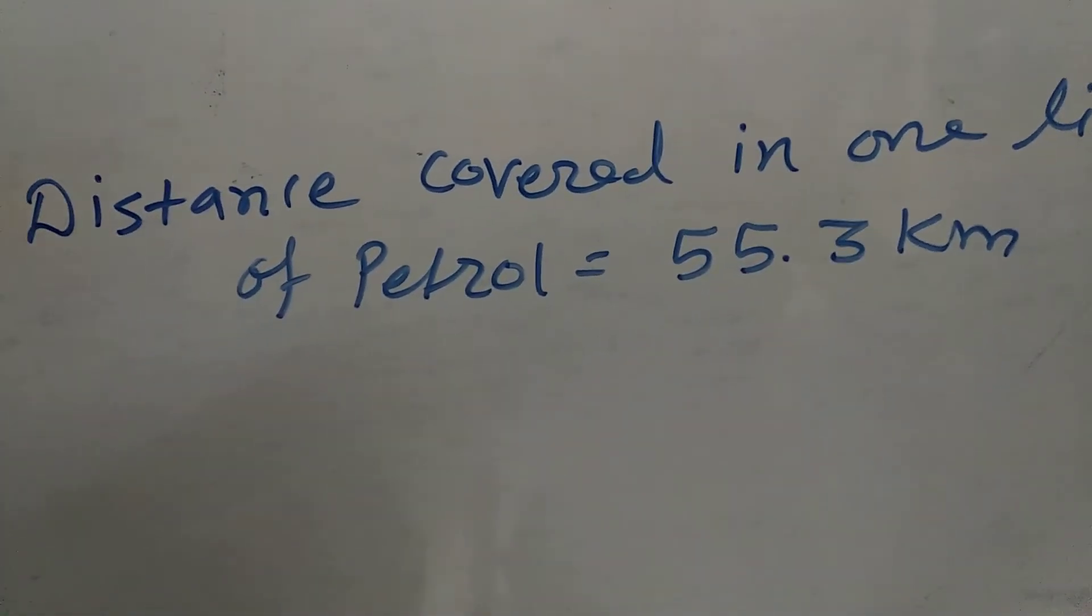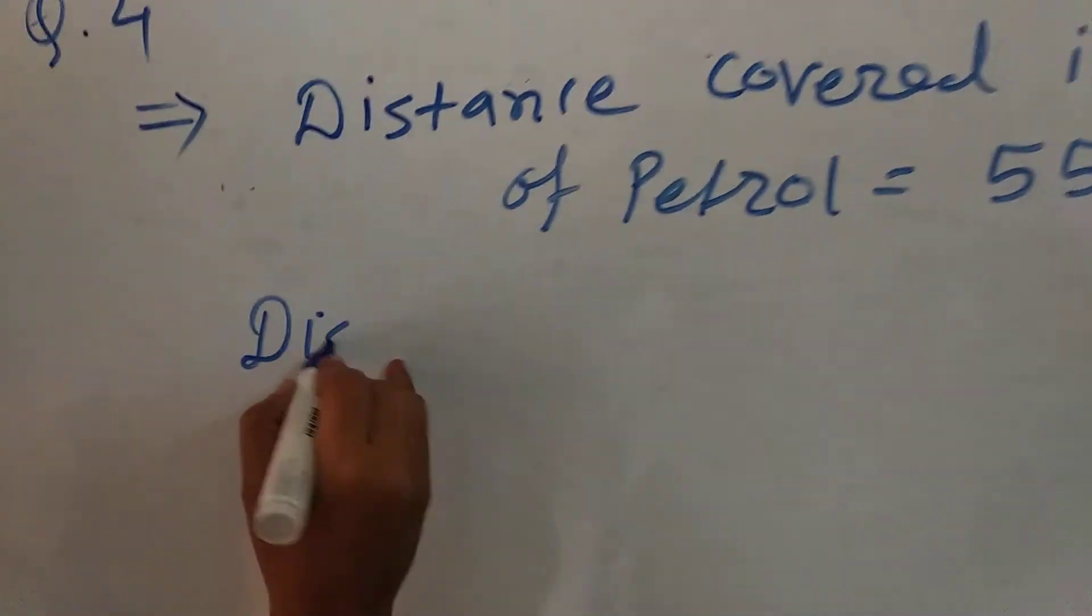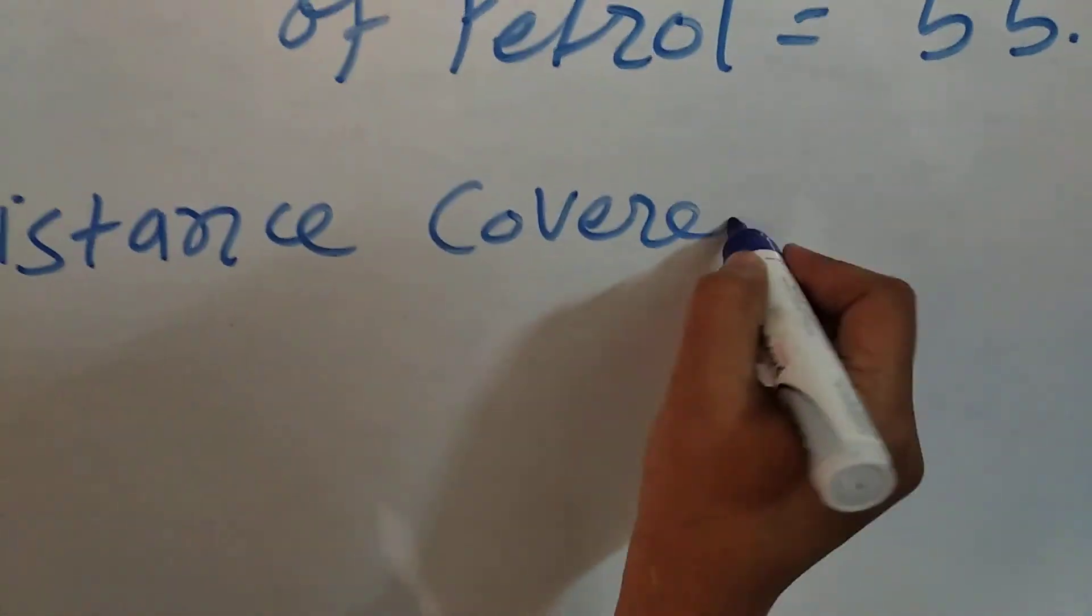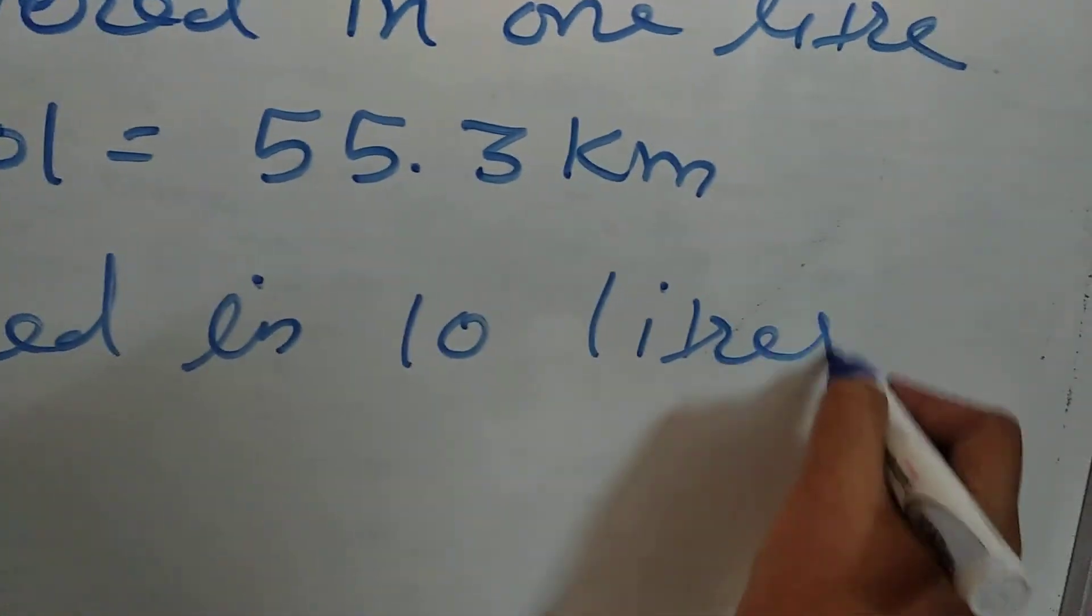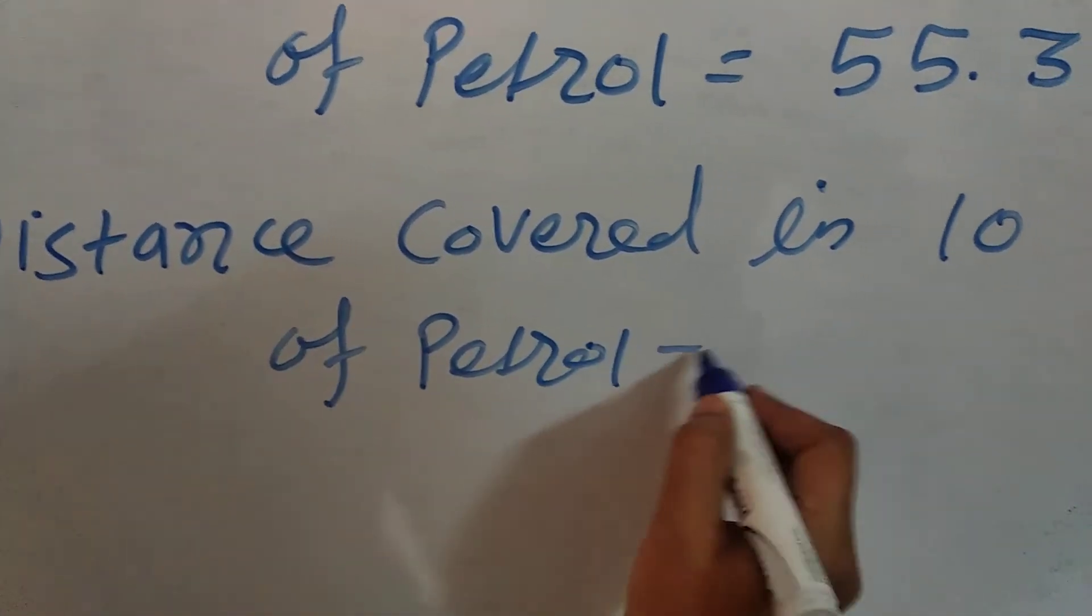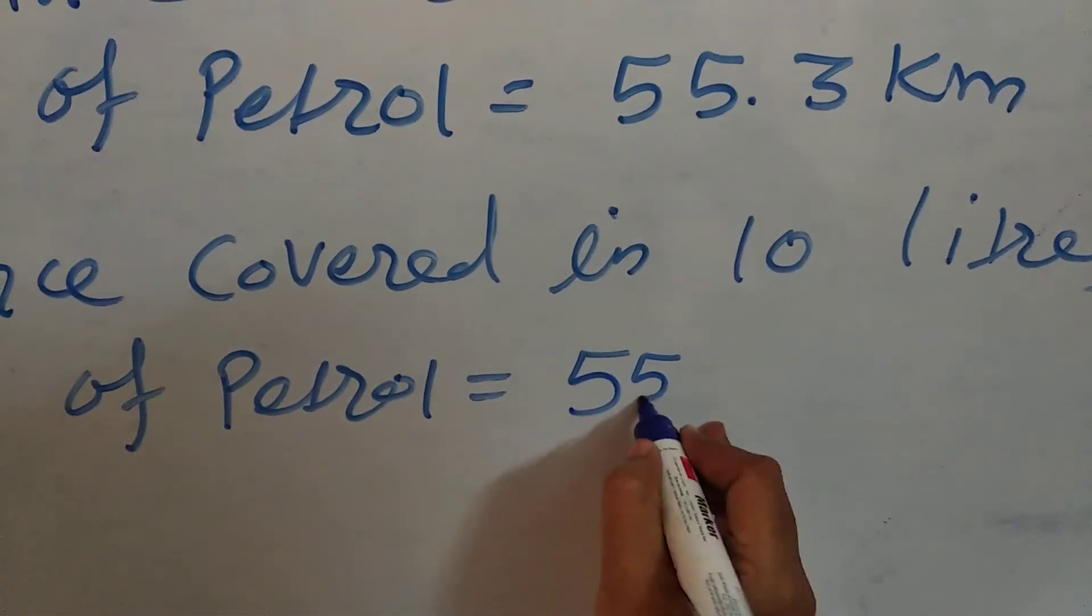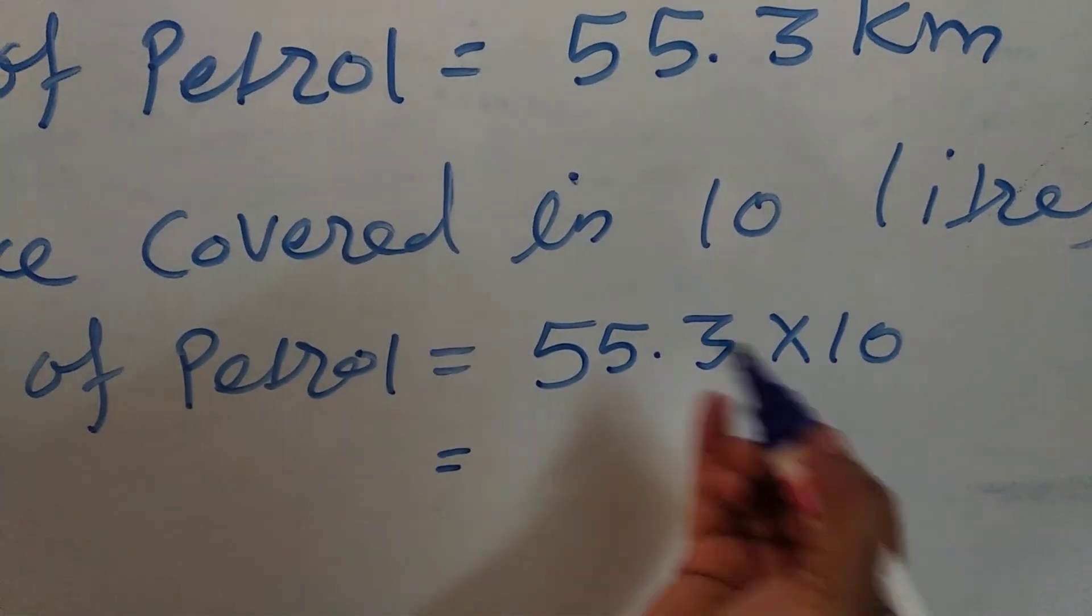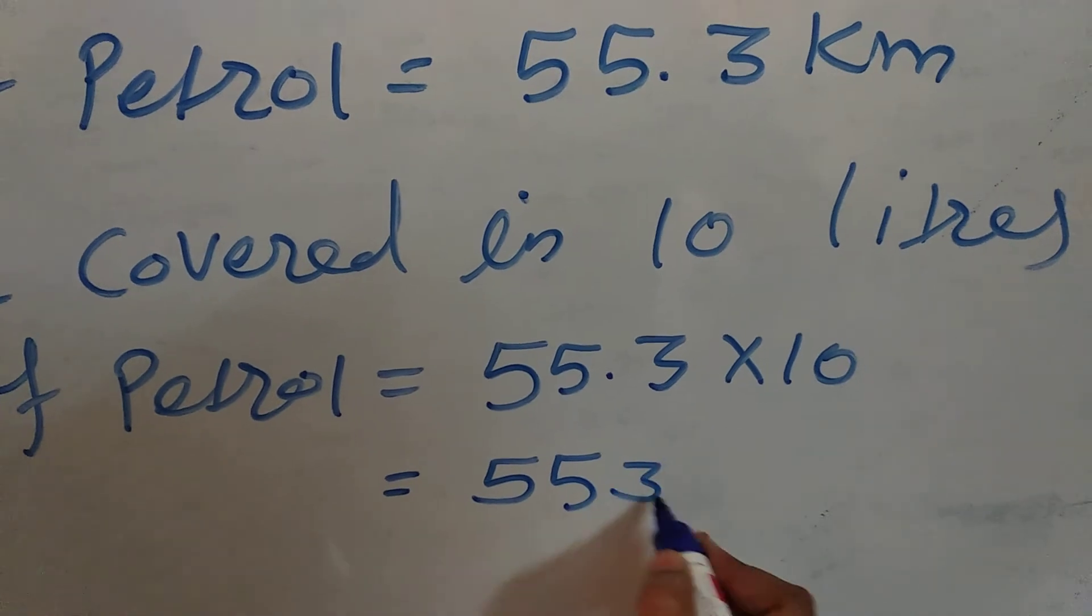Then, we have to find out distance covered in 10 litres of petrol. So, distance covered in 10 litres of petrol is equal to, you have to carry out the multiplication. That is 55.3 multiplied by 10. And here, you can do directly, answer is coming 553.0.